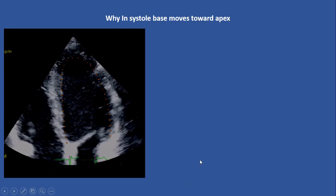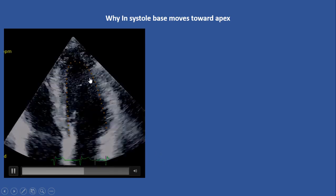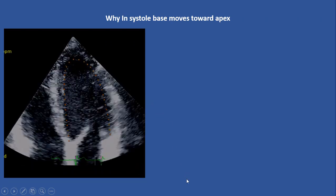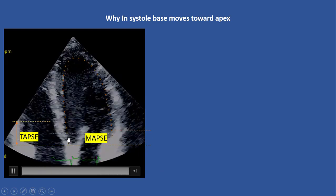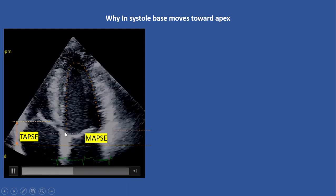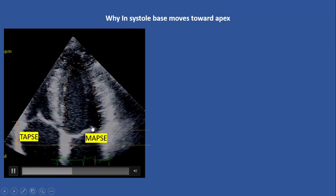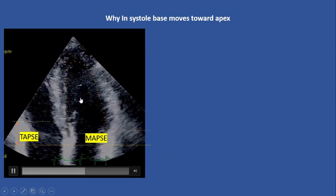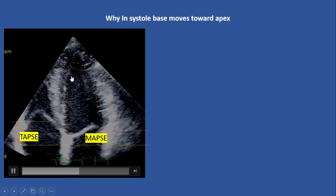Let's start this presentation with this question: why during systole does the base of the heart move toward the apex, while the apex is stable and doesn't move at all? We can measure this movement of the base of the heart by TAPSE and MAPSE, and these changes are very clear during cardiac activity. Why is that? Why doesn't the apex move inward, and only the base of the heart moves forward toward the apex?